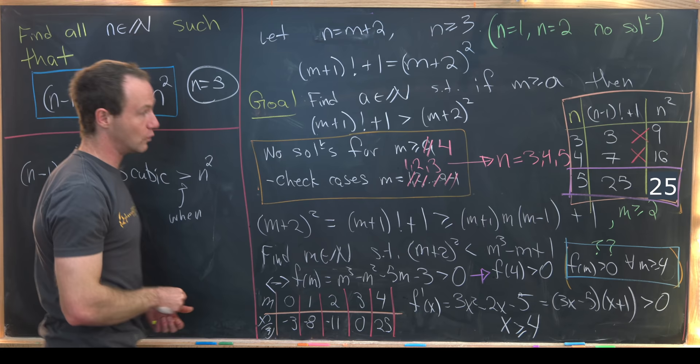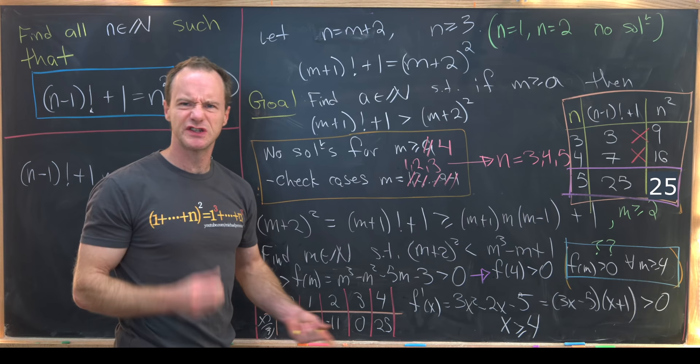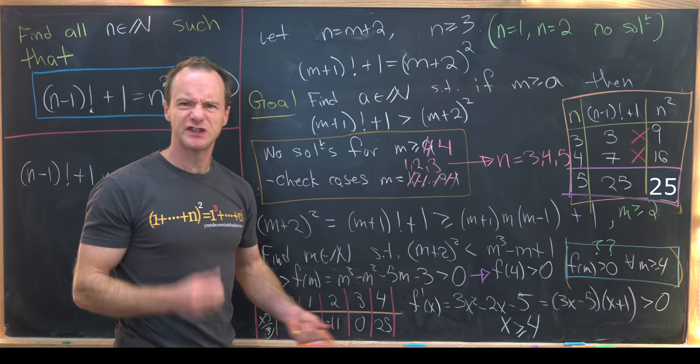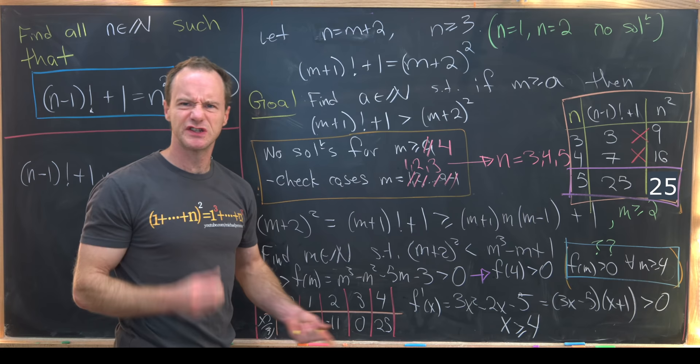So as we see we found our solution which is n equals 5. So and in fact that is the only solution. n equals 1 and 2 aren't solutions from an exercise that you can do on your own and there are no solutions for n bigger than or equal to 6 by this argument we had here after we change back from the m variable to the n variable and that's a good place to stop.